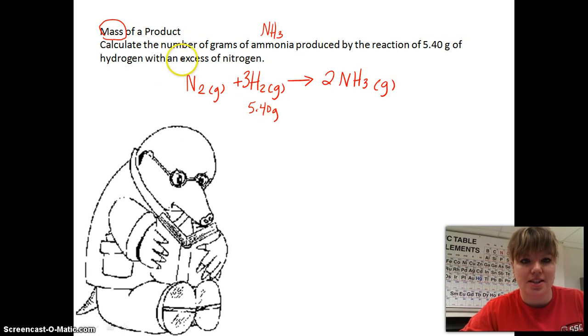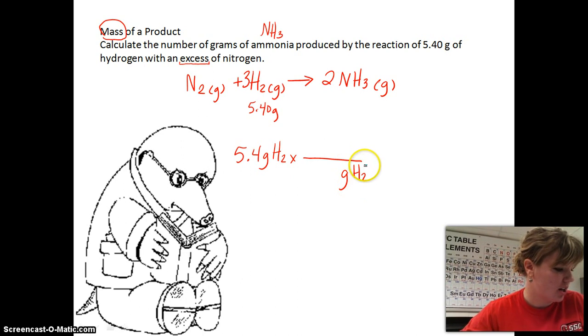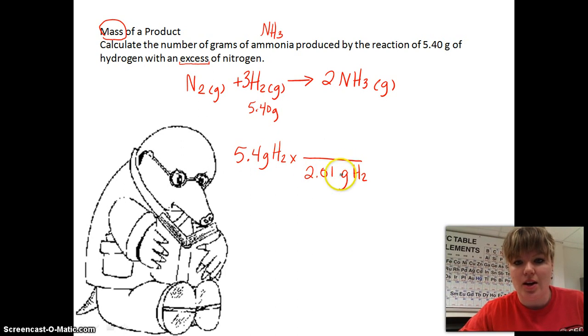So we have our balanced chemical equation. I write the 5.4 grams of hydrogen right here. And it's saying that we have an excess. Now, we're going to get more into this in the third section. The excess meaning there's more nitrogen than there is hydrogen, so we're going to have leftover hydrogen at the end of our experiment. But we don't have to worry about that right now. So let's write out our grams of hydrogen. And we know grams of hydrogen is going to have to be on bottom.